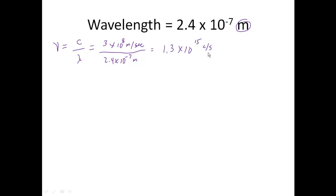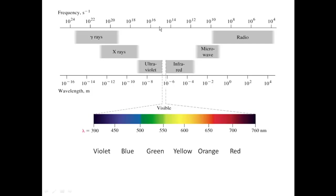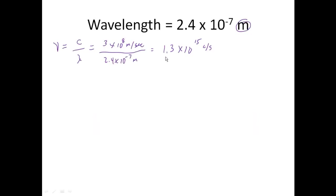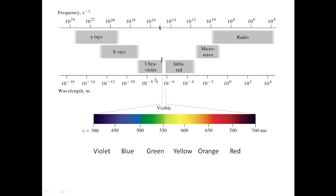Let's see where that's going to be — 10 to the 15th in frequencies is right about there. Looks like I'm probably going to have ultraviolet. But let's keep checking just to be sure. If we look at the wavelength, it's 2.4 times 10 to the minus 7th. That's going to be here on the chart. So it looks like it is going to be, in fact, ultraviolet — and that's actually 270 nanometers. So we are actually off the chart, just a little bit more into ultraviolet than we were last time.